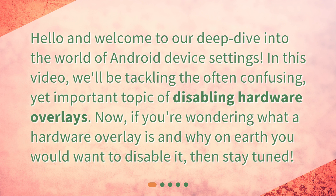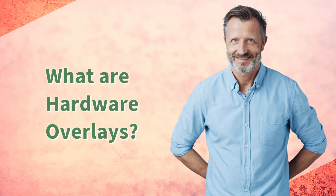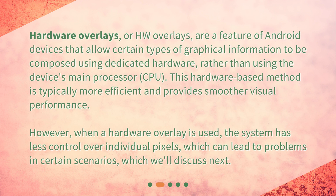Now, if you're wondering what a hardware overlay is and why on earth you would want to disable it, then stay tuned. Hardware overlays, or HW overlays, are a feature of Android devices that allow certain types of graphical information to be composed using dedicated hardware, rather than using the device's main processor, or CPU. This hardware-based method is typically more efficient and provides smoother visual performance.